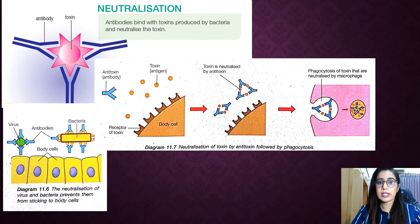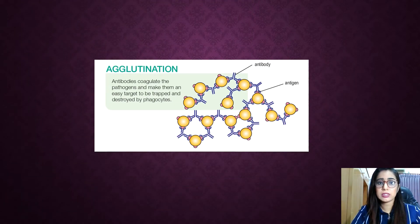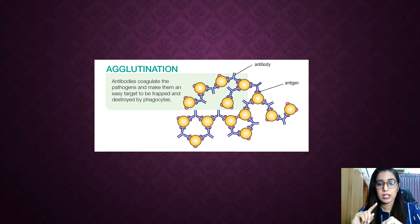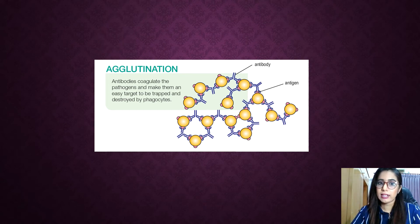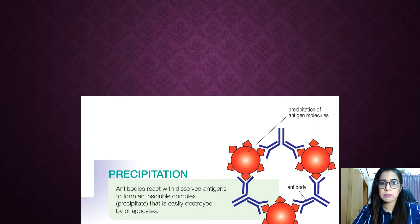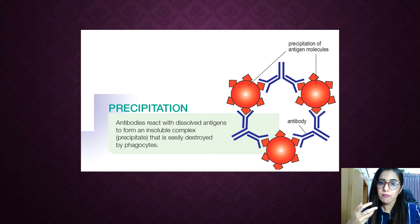Agglutination is when the antibody binds to an antigen and agglutinates — or clumps — the pathogens, making them unable to function. The clumping of these weakened pathogens facilitates phagocytosis by phagocytes, making it easier for them to engulf the pathogens once the antibodies agglutinate them.